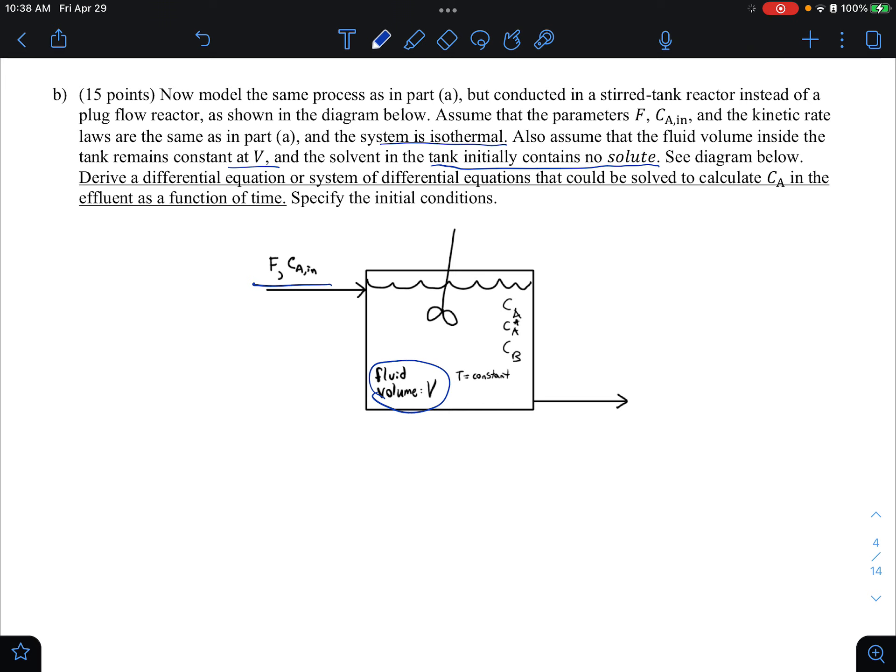See, diagram derive a differential equation or system of differential equations that could be solved to calculate CA in the effluent as a function of time. So notice that this question is not asking us to solve for CB as a function of time. So that's a bit of a twist. And then we want to specify the initial conditions. So once again, I think this question looks like a homework problem. It needs to be adapted to the specifics of the situation, but I don't see any curveballs in this question.